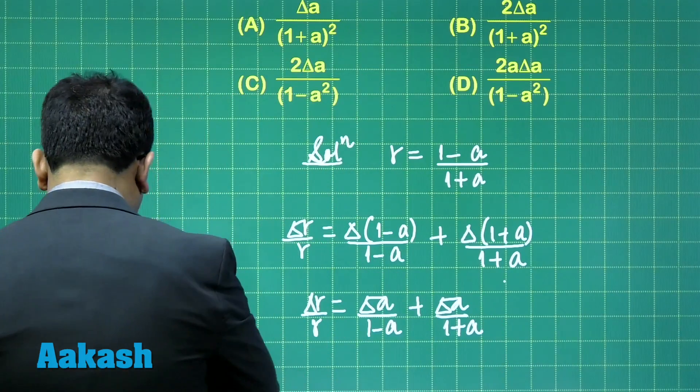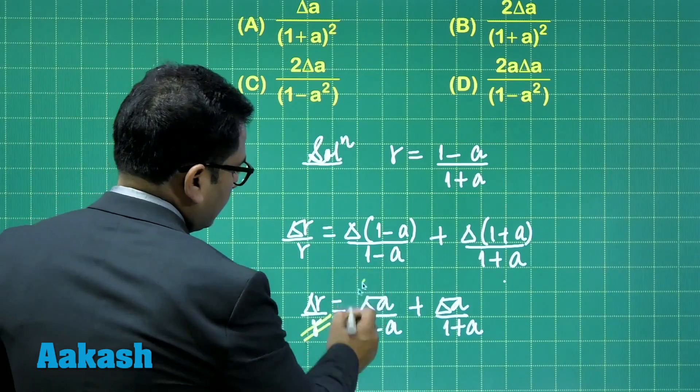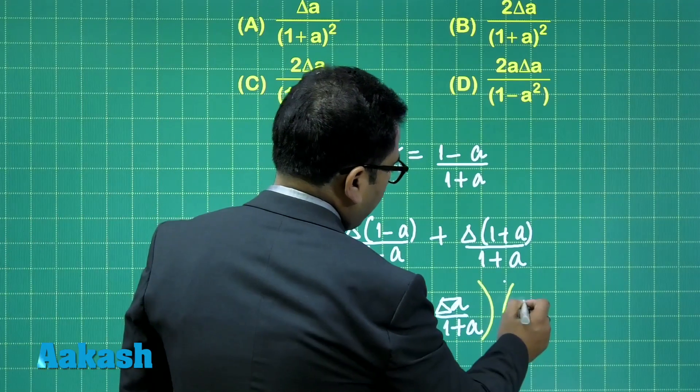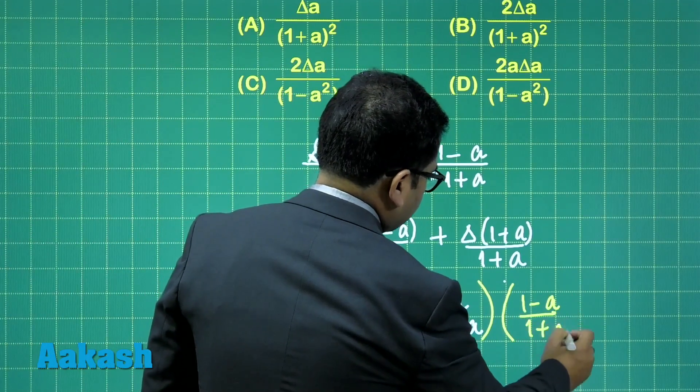Rest is a very easy calculation. This r, you can take it here and multiply by r, which is (1 minus a) by (1 plus e).